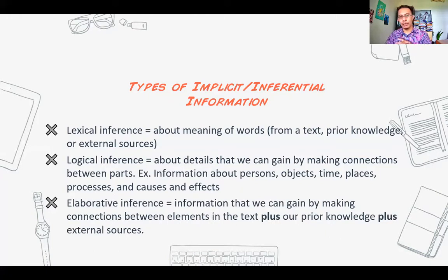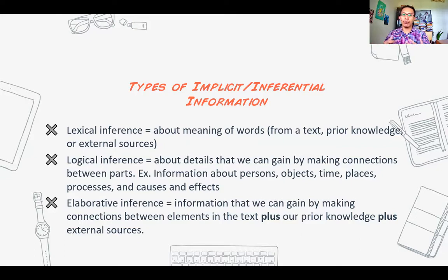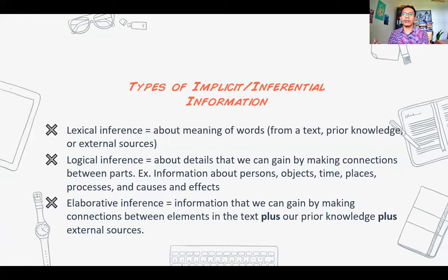The third type of information is what we call the elaborative inference. You can get this information by making connections between parts of the text and using your prior knowledge of how the world works. You can also use external sources — information out there in the world — to help you gain information from the text. The text might have indications or cues, and with your prior knowledge and external sources, your knowledge will become bigger than the text itself.